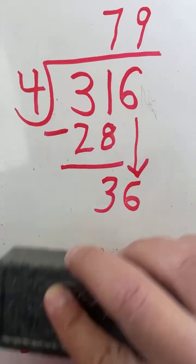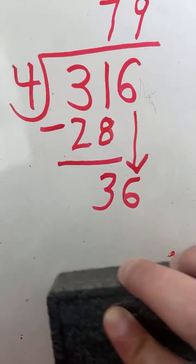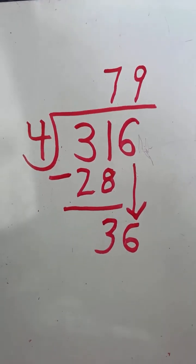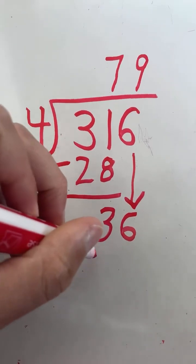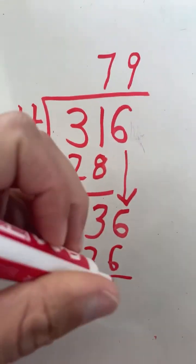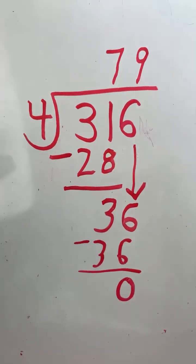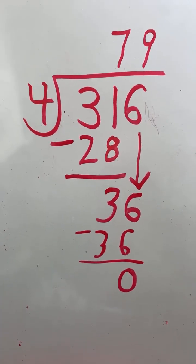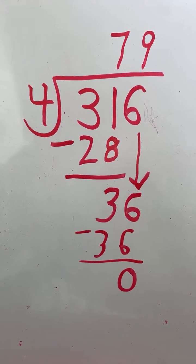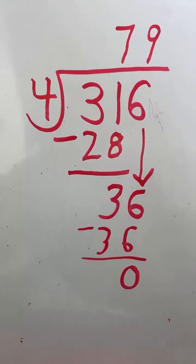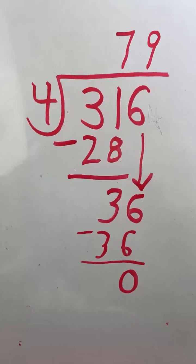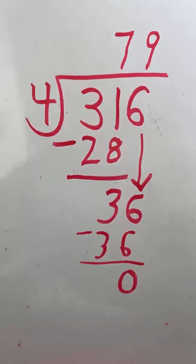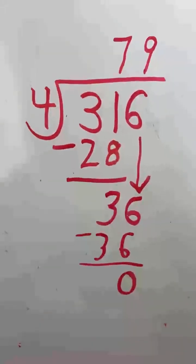Next, we're going to do 36 minus 36 to make sure there's no remainder. 36 minus 36 equals 0, so there is no remainder there. 316 divided by 4 equals 79. Shout out to everybody tuning in. Please hit the like button, it really helps the algorithm. 316 divided by 4 equals 79.